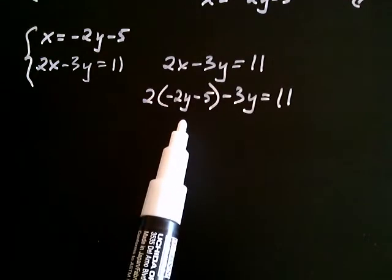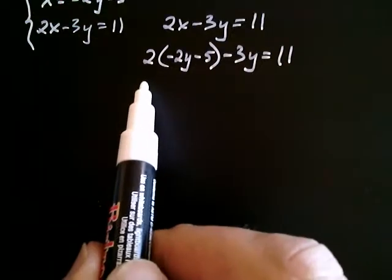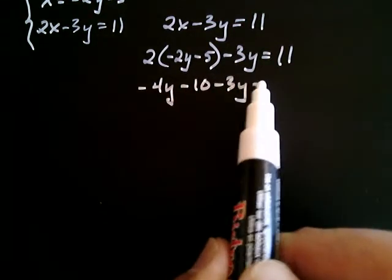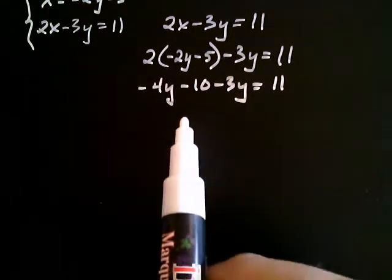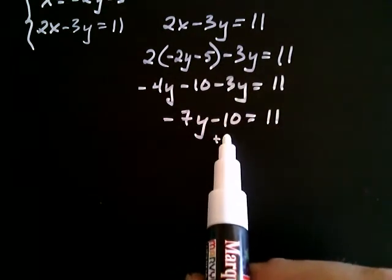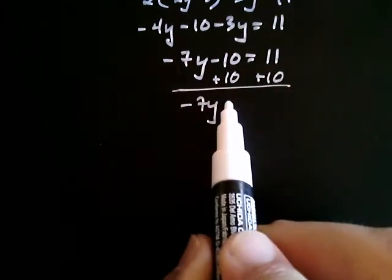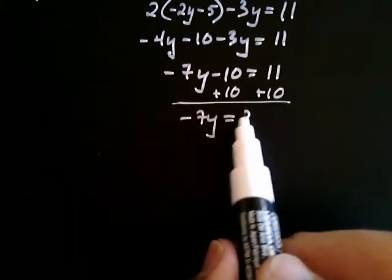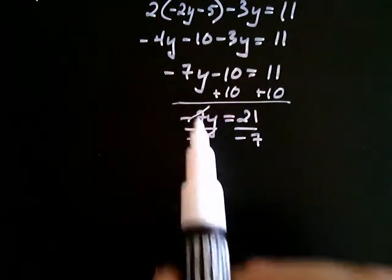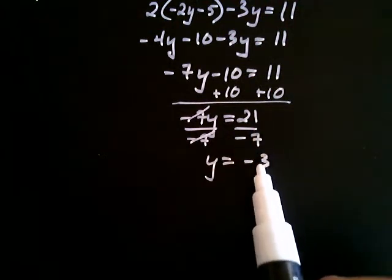I only have y here, and I know how to solve for it. I distribute the 2 to get negative 4y, and 2 times negative 5 is negative 10, minus 3y equals 11. Combining like terms on the left-hand side gives negative 7y minus 10 equals 11. Adding 10 to both sides gives negative 7y equals 21. Dividing both sides by negative 7, the negative sevens cancel, and a positive divided by a negative is negative — 21 divided by 7 is 3 — so y is equal to negative 3.